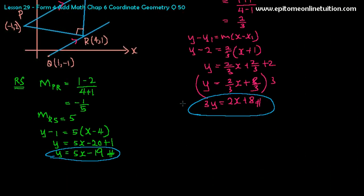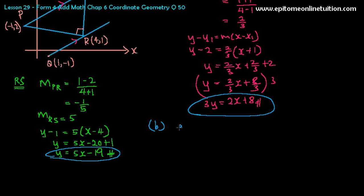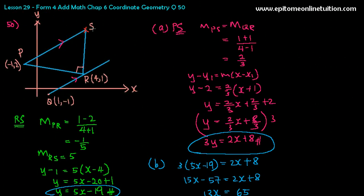So to find B, Y is 5X minus 19. I'm going to just substitute directly. So 3Y is 5X minus 19 equals to 2X plus 8. So 15X minus 57 is equal to 2X plus 8. So that is 13X is equal to 65. And so X is 5. So you have found X is 5. That is the X coordinate of point S over here. Yes. X coordinate.